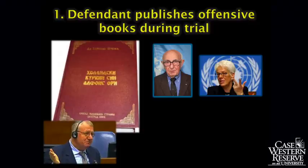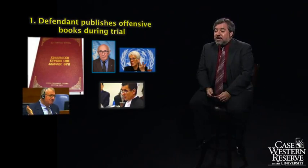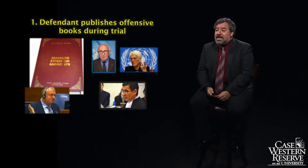He wrote a book about Chief Trial Attorney Geoffrey Nice accusing him of being bisexual and having relationships with many people involved in the trial. And he wrote a book about the chief judge of the appeals chamber, Theodor Meron, an American, calling him 'the genocidal Jew of the Netherlands.' These books are really disturbing — they get under the skin of the trial participants and are designed both to do that and to get the people back home to hate the trial and think it's unfair.